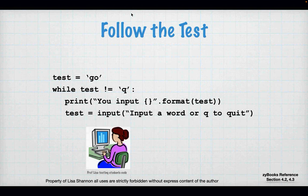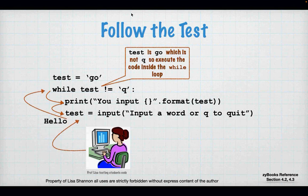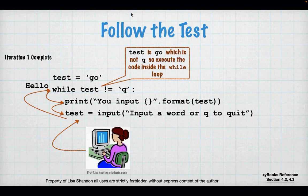Right now test is `go` — it's not Q, so we're going to go inside the while loop, execute the print statement, and then we get to the input for `test`. Professor Lisa is going to put in the word `hello`. When I put in `hello`, you'll notice the arrow went back up to the top of the loop — I completed the first iteration because I'm now back at that while statement. Now test is `hello`, and since `hello` is not equal to Q, we're going to print and ask for input again.